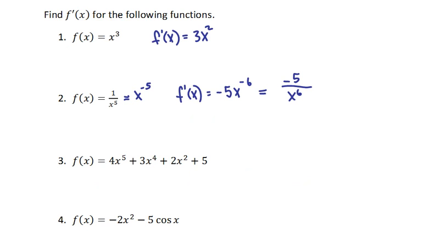The next question then is 4x to the fifth, 3x to the fourth, 2x squared plus 5. We're trying to find the derivative of that expression. And this is just an example of the sum or difference rule. The derivative of a sum or difference is just the sum or difference of the derivatives. So we find the derivative of each term, and then we add or subtract them together. Each term individually is just going to be either a power rule or a constant rule in this case. And so we get 20x to the fourth, plus 12x to the third, plus 4x, and the derivative of 5 is 0. So that's our final answer there.